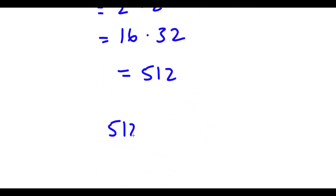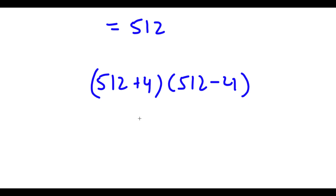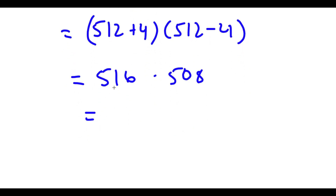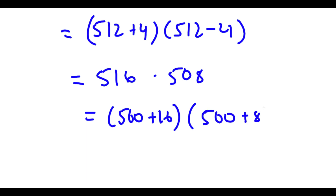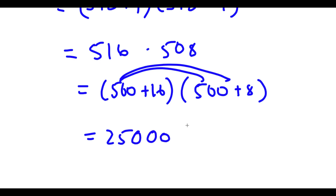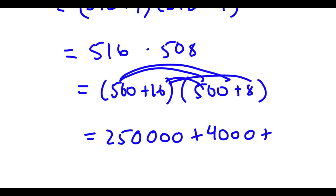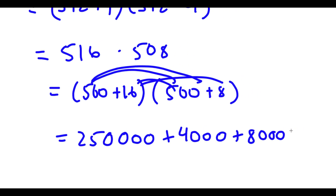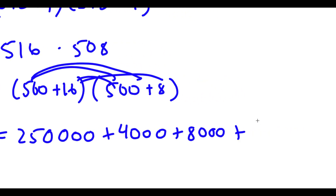So now I have 512 plus 4 times 512 minus 4. 512 plus 4 is 516, and 512 minus 4 is 508. I'm going to rewrite 516 as 500 plus 16, and rewrite 508 as 500 plus 8. So now multiplying these two is simple. I first distribute the 500: 500 times 500 is 250,000. And 500 times 8 is 4,000. Now I distribute the 16: 16 times 500 is 8,000. And 16 times 8 is 128.